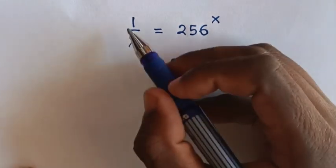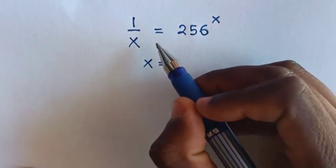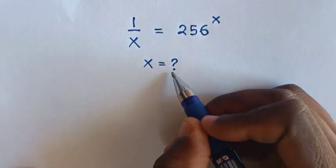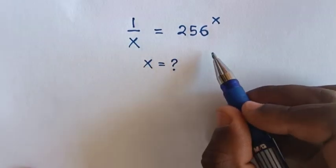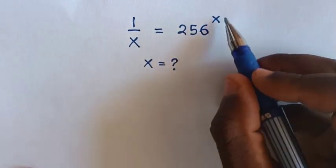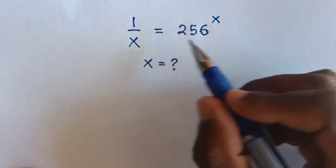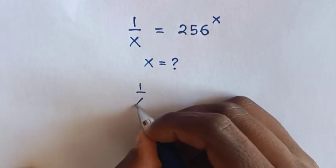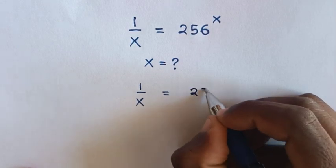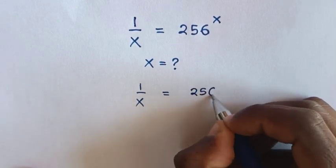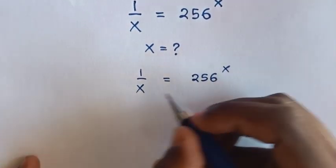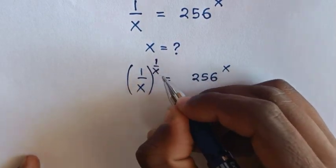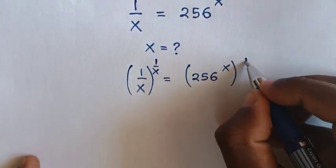Hello. How to solve 1 over x is equal to 256 power of x, to find the value of x. So first from this equation, to cancel the power of x we multiply by 1 over x in both sides. So it will be 1 over x is equal to 256 power of x, then we multiply by power of 1 over x in both sides.